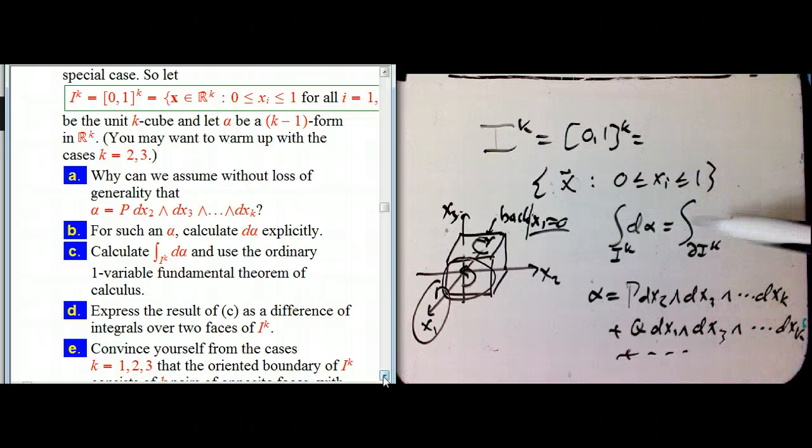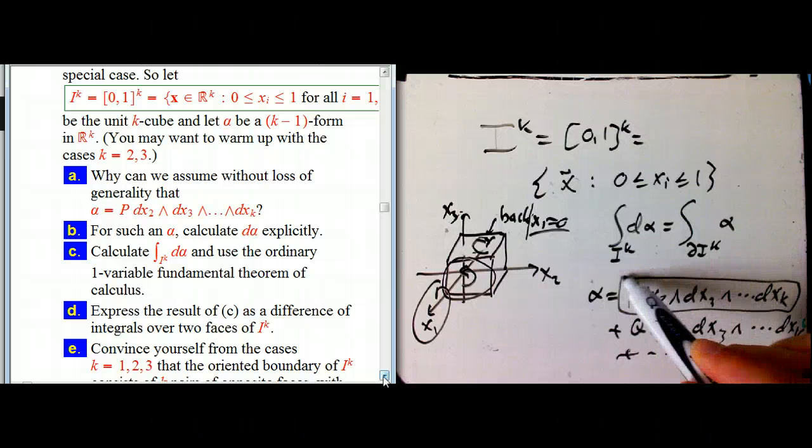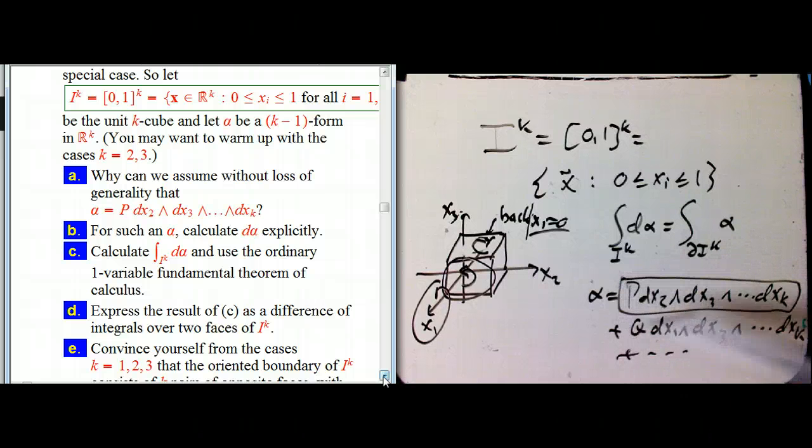Each one is going to be missing exactly one of the dx's so that it's a k minus one form so that you integrate d alpha over all of I^k. But both these sides are linear. d is linear, the integration process is linear. So if it works for one of these pieces, certainly there's a coordinate symmetry here that if it works for one, it should work for everything. And if it works for each individual piece separately, it's going to work for the sum.